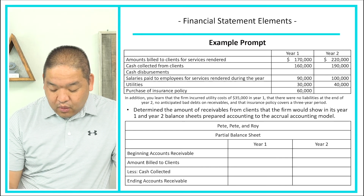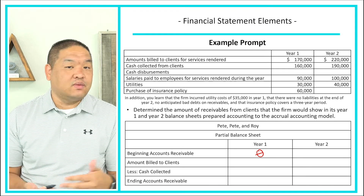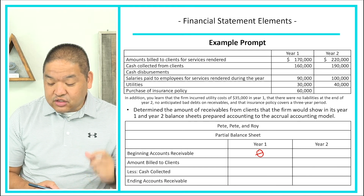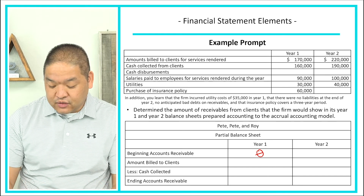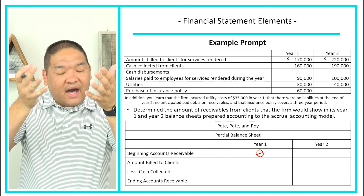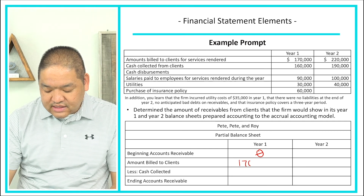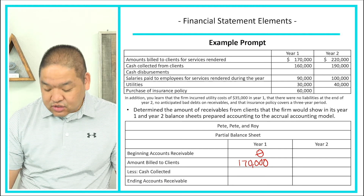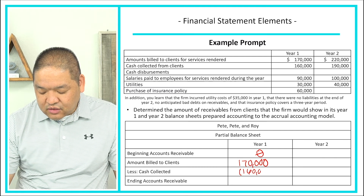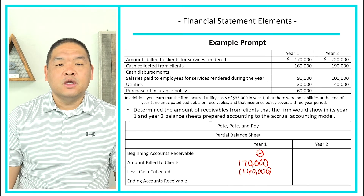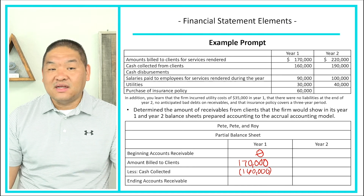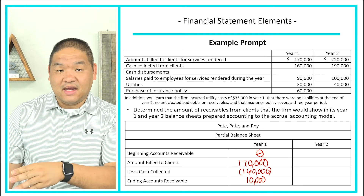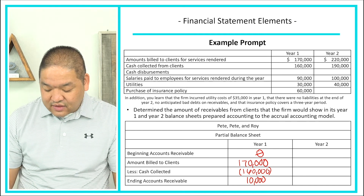For year one, the beginning accounts receivable balance is zero — it's the firm's first year. We earned $170,000 in revenue, increasing accounts receivable by $170,000. Clients paid us $160,000 in cash, reducing the balance by $160,000. The ending accounts receivable balance for year one is $10,000 — meaning clients still owe us $10,000.